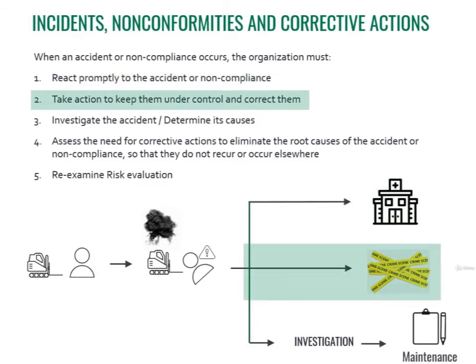Then your company should take action to keep the situation under control and correct it. This means putting something on the forklift that prevents anyone unaware of the malfunction from using it, and also fixing the forklift by calling a specialized mechanic. So far, we just described what any company does when an incident occurs — but that's not enough. It's not a systemic way of dealing with problems.